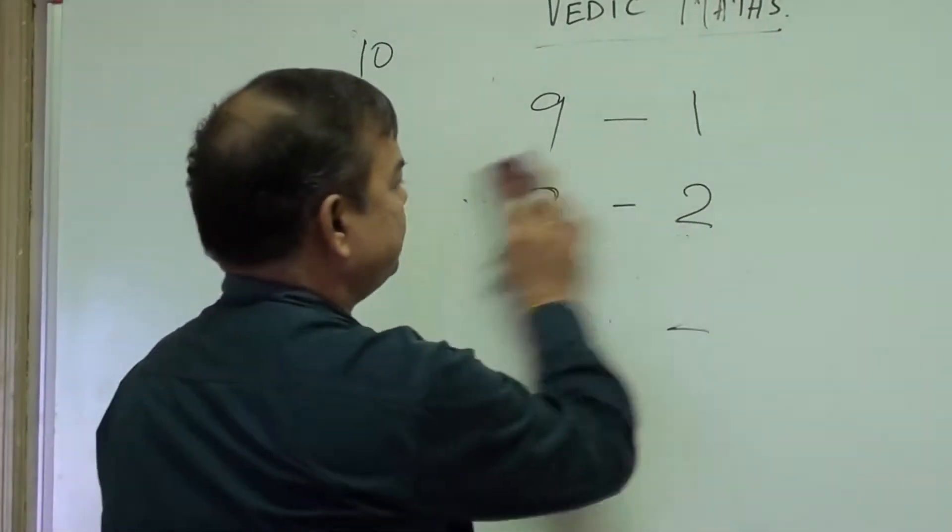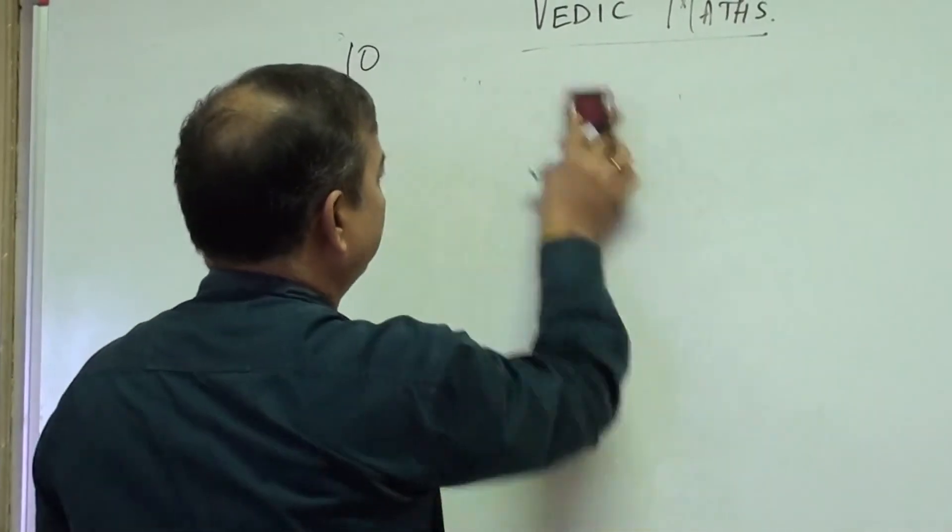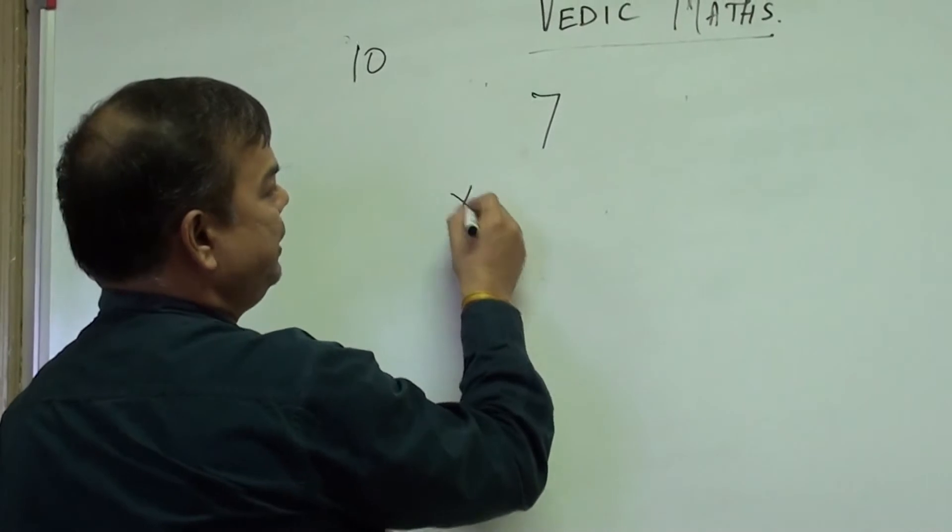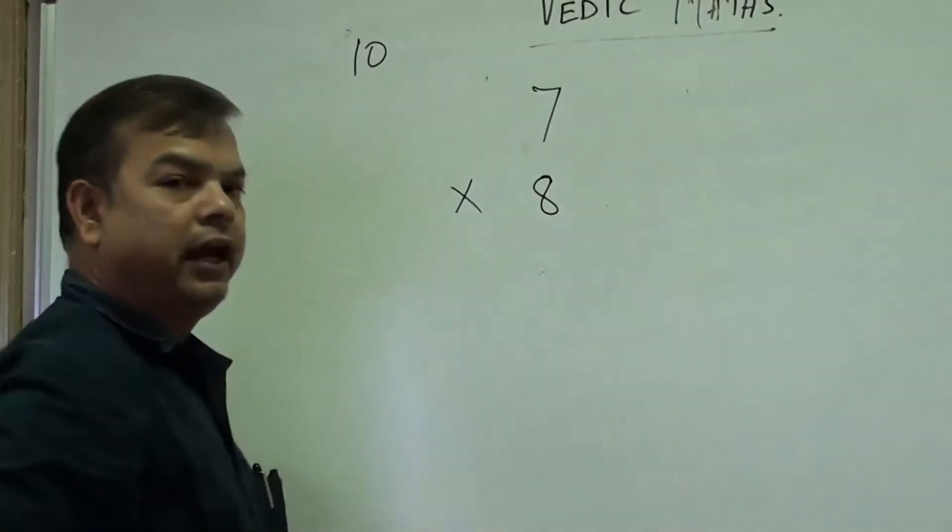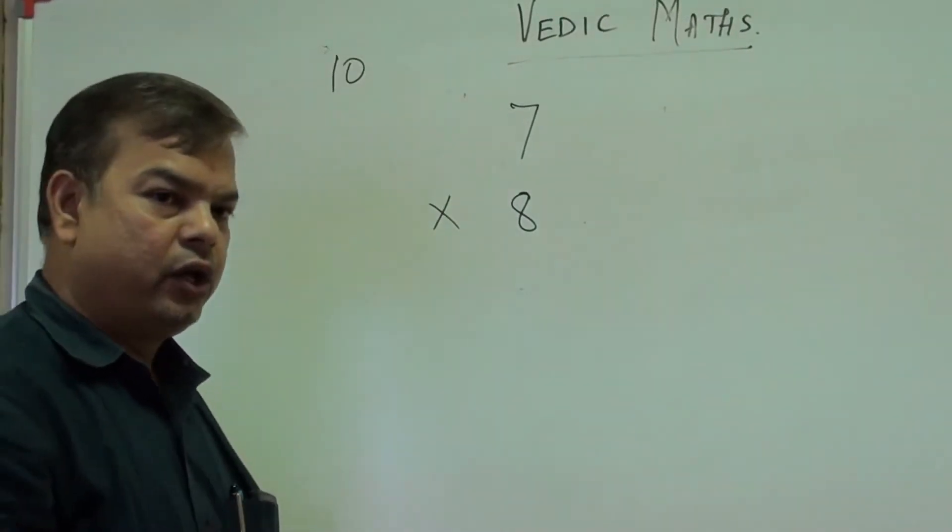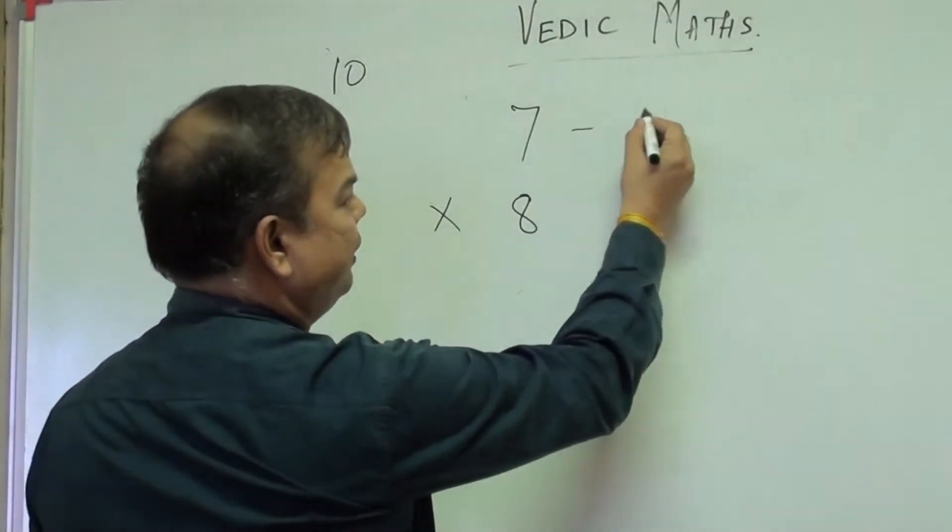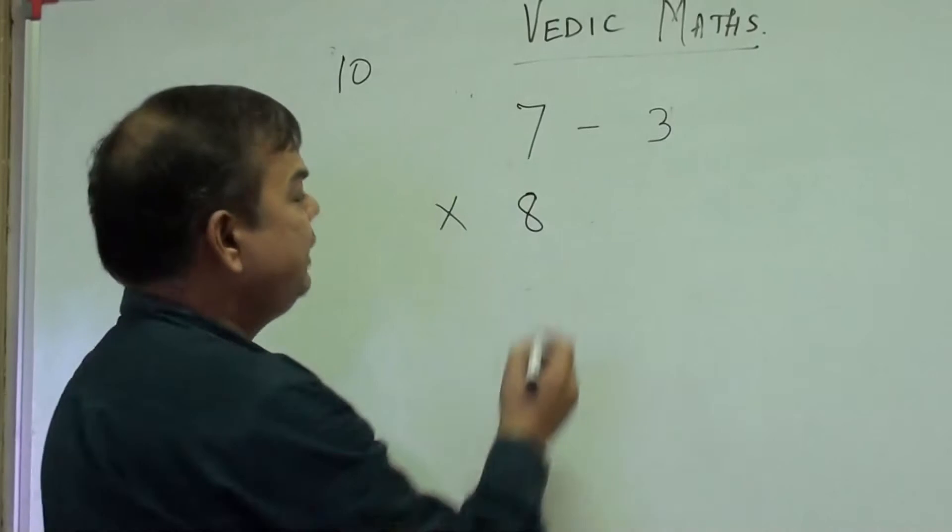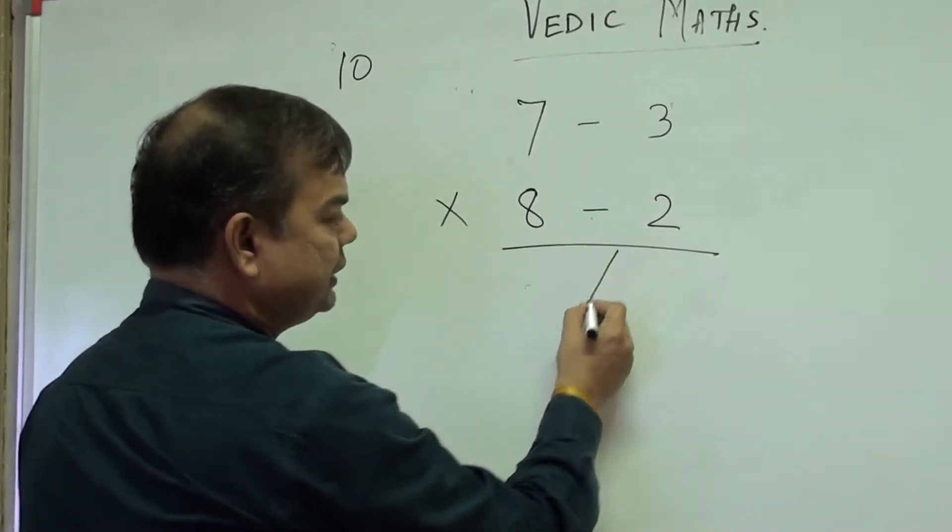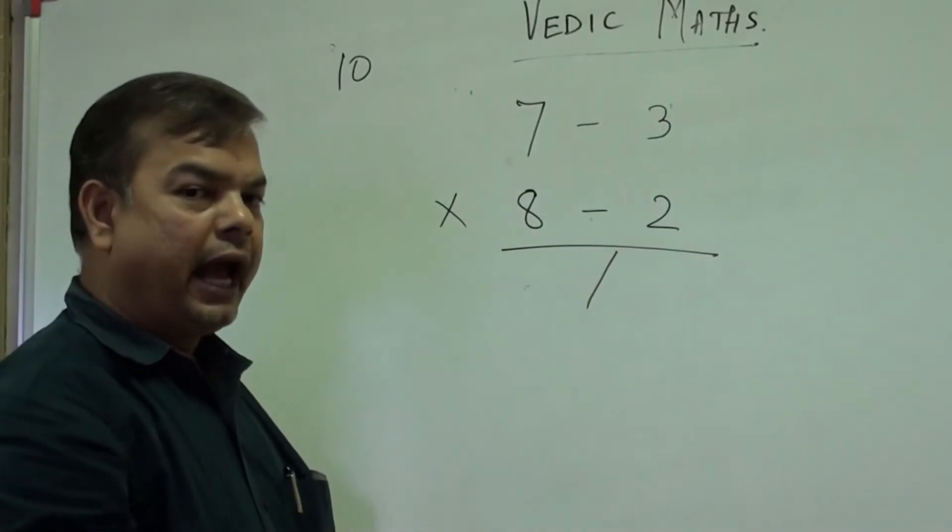Now let us take another example: 7 multiplied by 8. Now in this case both the numbers are close to 10, so 7 will be written as 7 minus 3, and 8 will be written as 8 minus 2. So again draw a forward stroke here and multiply minus 2 with minus 3.